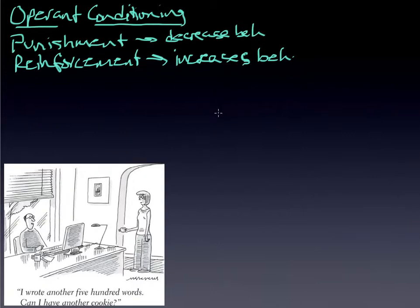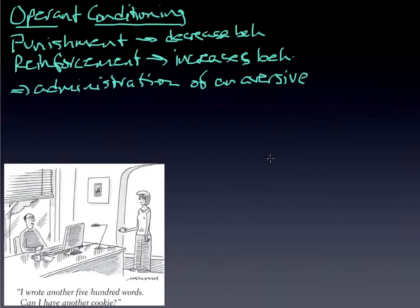In that case, if punishment decreases a behavior or likelihood of a behavior to recur, essentially when we're talking about punishment, it is the administration of an aversive or undesirable consequence. So you go speeding down Alameda and a cop catches you and gives you a ticket, that would be punishment. It's expected that giving you a ticket will discourage you from doing it again.